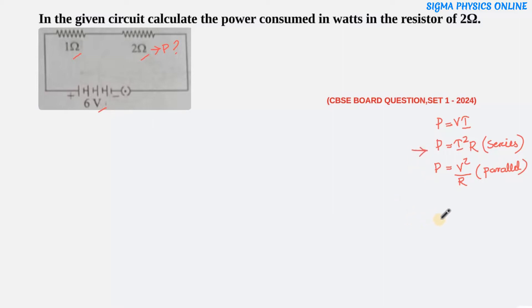The formula we'll use to solve this question is the second one. Let's write what's given: R1 = 1 ohm, R2 = 2 ohm, and V = 6 volt.